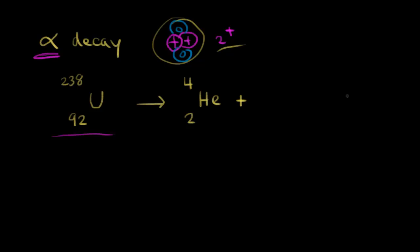We're trying to figure out the other product from our nuclear equation. Nucleons are conserved — if I have 238 nucleons on the left, I need 238 nucleons on the right. I have four from my alpha particle, so I need 234 more. 234 plus four gives me 238 on the right, so nucleons are conserved.